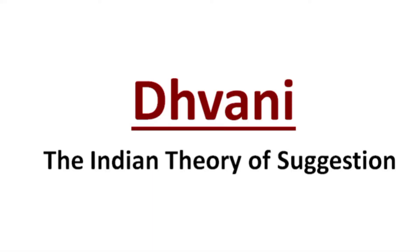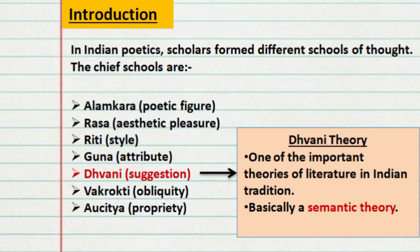Through this video, let's understand the basics of Dhvani theory of Indian Aesthetics. In Indian Aesthetics, there are different schools that have put forward various theories about Aesthetics. Among them, the chief schools are the Alankara, Rasa, Riti, Guna, Dhvani, Vakroti, and Aujithya.